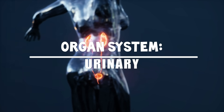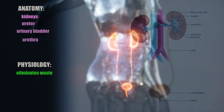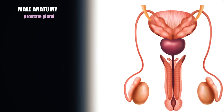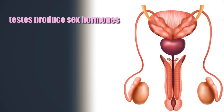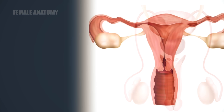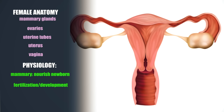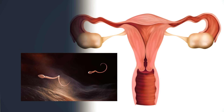Urinary system is comprised of kidneys, ureters, urinary bladder, and the urethra. It eliminates nitrogenous waste from the body and regulates water, electrolytes, and pH balance of the blood. Reproductive system — the male reproductive system is comprised of the prostate gland, penis, testes, scrotum, and ductus deferens, and functions to produce offspring. The testes produce sperm and male sex hormones. The female reproductive system is comprised of the mammary glands, ovaries, uterine tubes, uterus, and vagina. The ovaries produce eggs and female sex hormones. The remaining structures are sites for fertilization and developing the fetus.